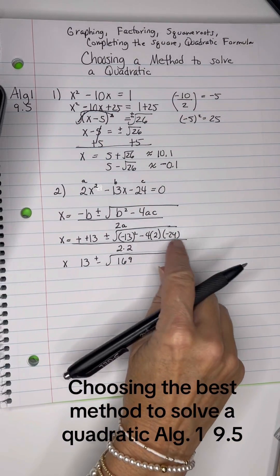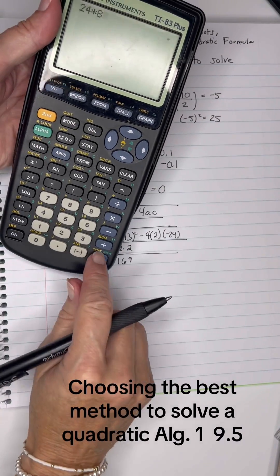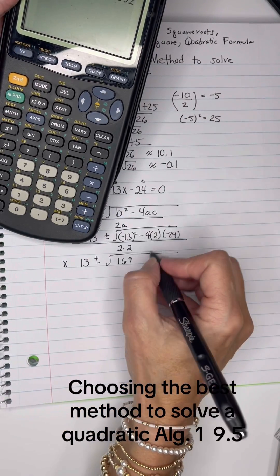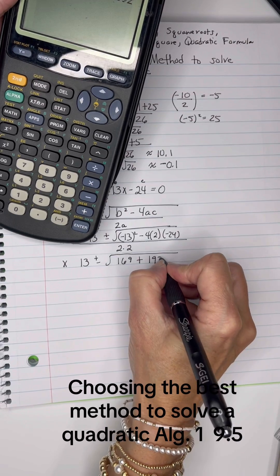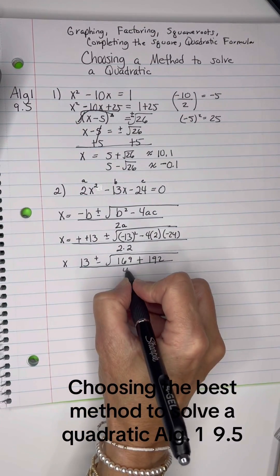And then we've got 4 times 2 times 24. Let's see, that's 24 times 8, which is positive 192. A negative times a negative is a positive. All over 4.